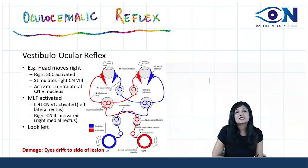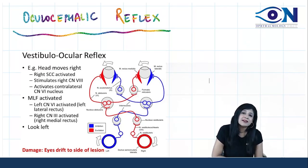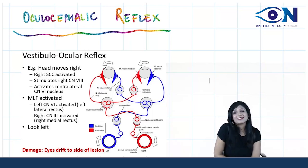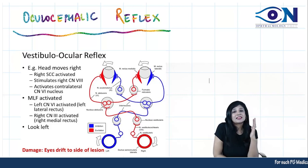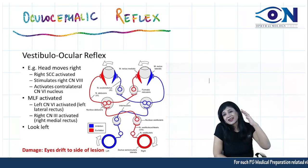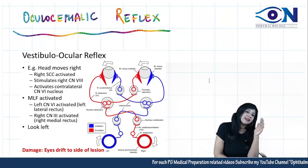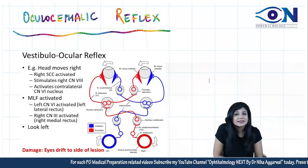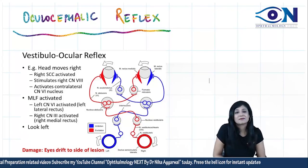This is the vestibuloocular reflex, also called the oculocephalic reflex, and it is also the basis of the third step in the Parks three-step test. When the head is tilted to the right or left side, the eyes move to the opposite side to maintain balance — that is the basis of this third step of the Parks three-step test.